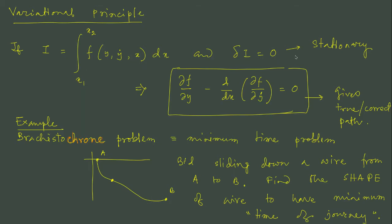If we demand this integral to be stationary over the correct path, then this is the equation of the correct path. Just like we got it for the Lagrangian, here we have del f del y minus d dx of del f del y dot.